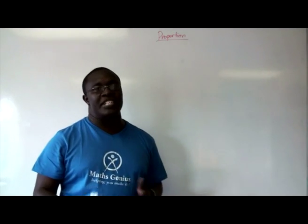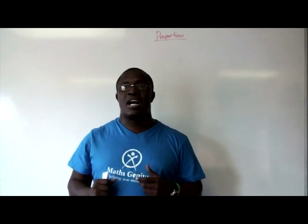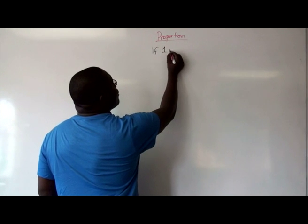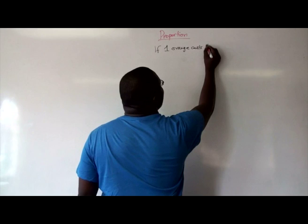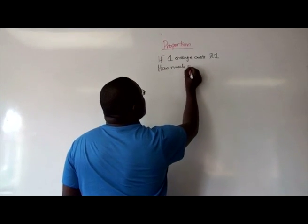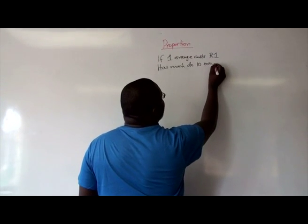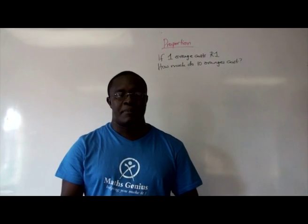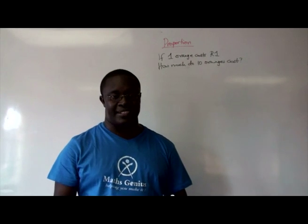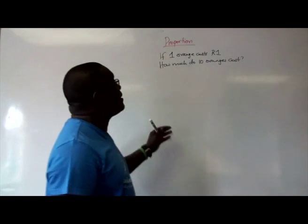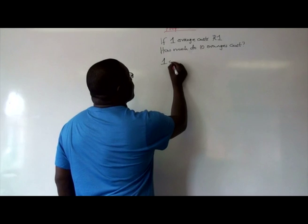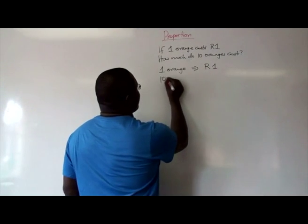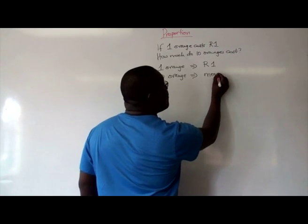So we use proportion on a daily basis in our lives when we go out to the shops to buy, when we go out and do any transaction of any sort. For example, if I want to ask you, if one orange costs one rand, how much do ten oranges cost? I know this is a basic question, which you can do with your eyes closed. But here, you are actually using the idea of proportion without you even really recognizing the idea.